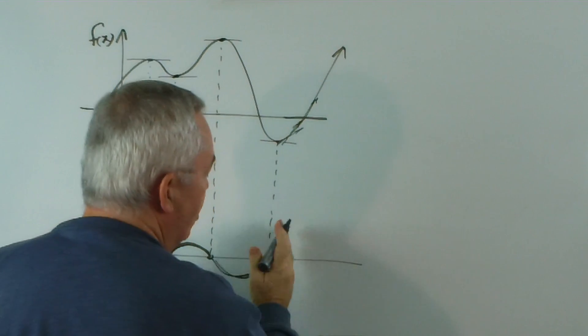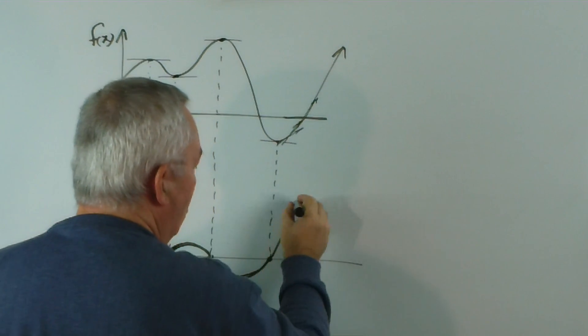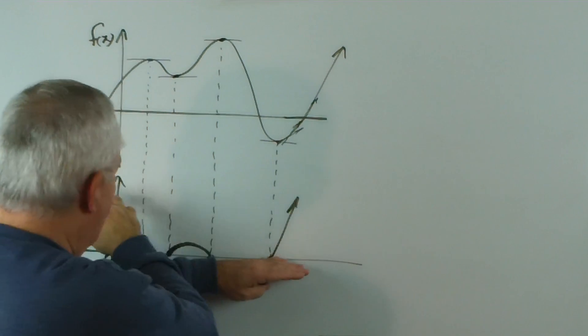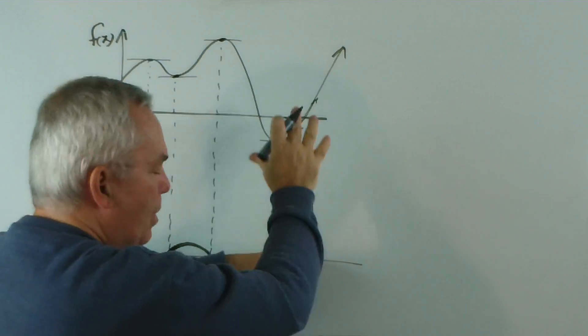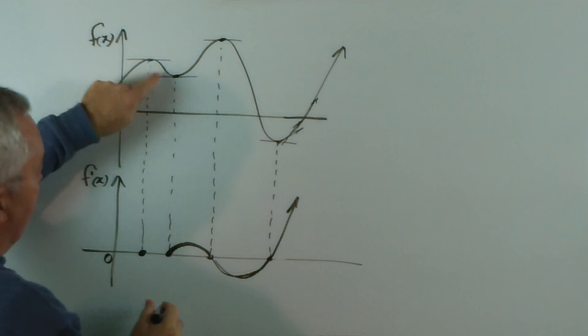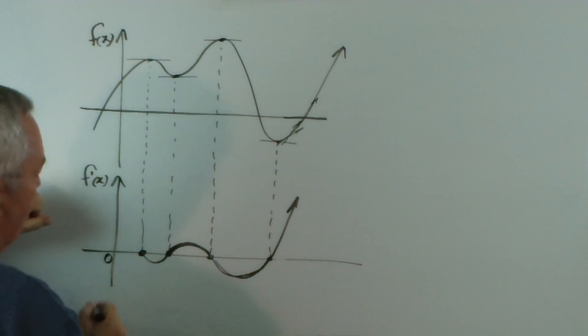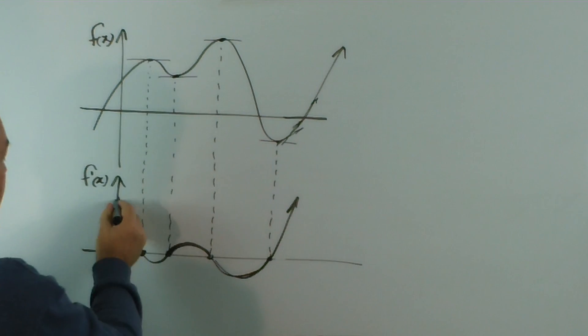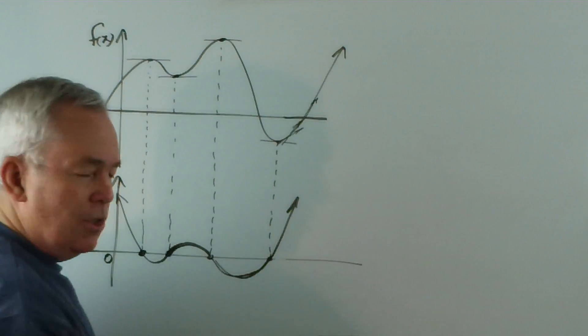Consequently, in this region, in this domain, all the gradients will, this is the gradient function, all the gradients will be above zero. And we work our way back. These are negative gradients, negative results, positive gradients, positive results. And this is our gradient function.